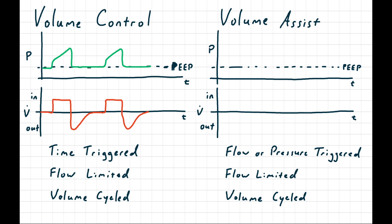The only difference between a control mode and an assist mode is how the breath is triggered. In a control mode, the breath is triggered purely by the timer set by the respiratory rate. In an assist mode, the ventilator is triggered by the patient trying to initiate a breath, and the ventilator detects that either with a flow trigger or with a pressure trigger.